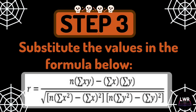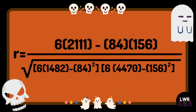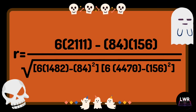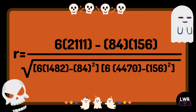Step number 3: substitute the values in the formula below. So if you substitute the values in the formula, r is equal to 6 times 2,111 minus 84 times 156.